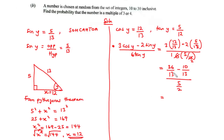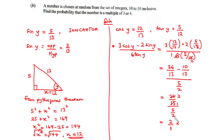Let's further simplify. At the numerator, the denominators are the same, so we work on the numerator: 36 minus 10 is 26. So we have 26 over 13, divided by 5 over 2. Now 26 divided by 13 is 2, giving us 2 over 1 divided by 5 over 2. Multiplying by the reciprocal, 2 over 5, we get 4 over 5. Therefore the answer is 4 over 5, or 0.8.